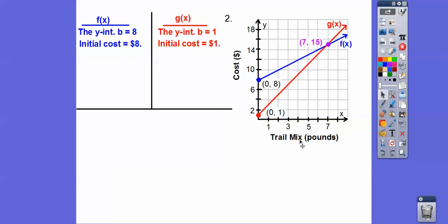Again, this is the initial cost because that's what this says over here - cost. And then down here is trail mix in pounds. Let's find the slopes again of both those lines.